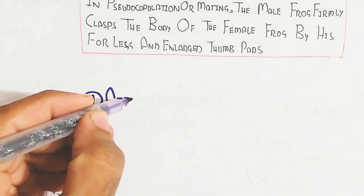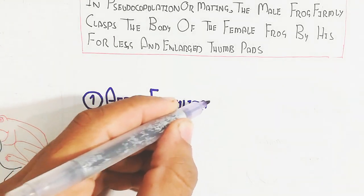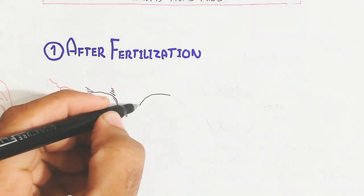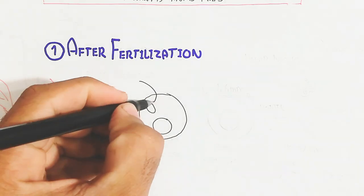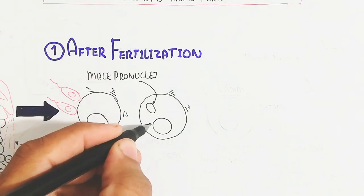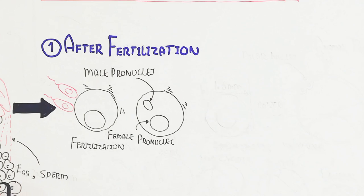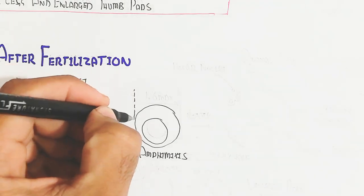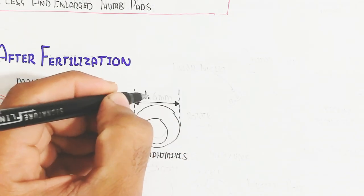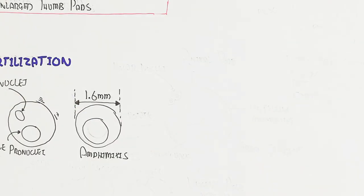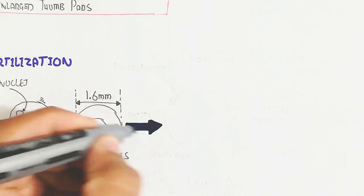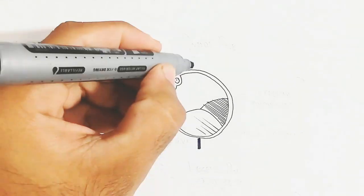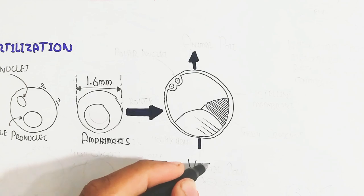After the spray of sperm through pseudo-copulation, fertilization occurs with the union of sperm and egg. One sperm is required for one egg — haploid plus haploid to form diploid. After fertilization, the pronuclei are present, meiosis second is completed, and the pronuclei of the female and male mix together — this is called amphimixis — forming the zygote at 1.6 micrometers enlargement.